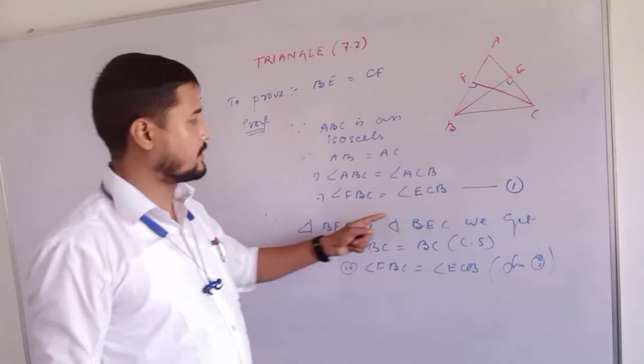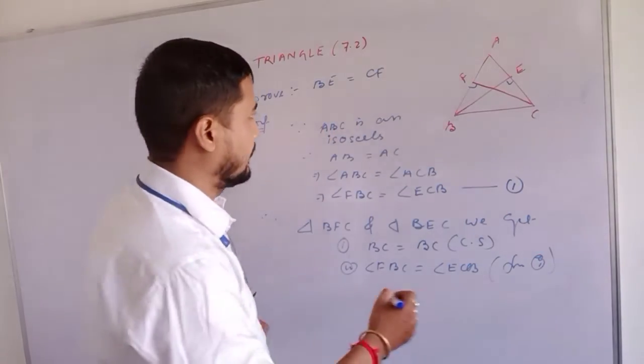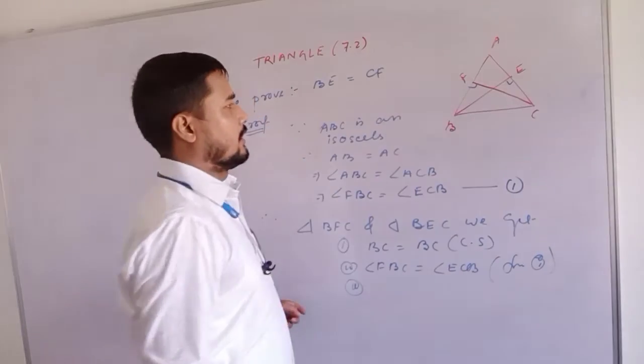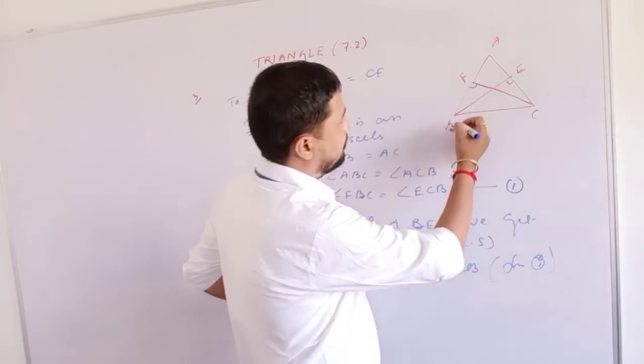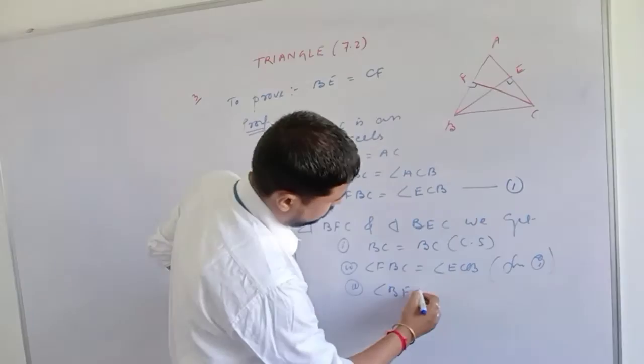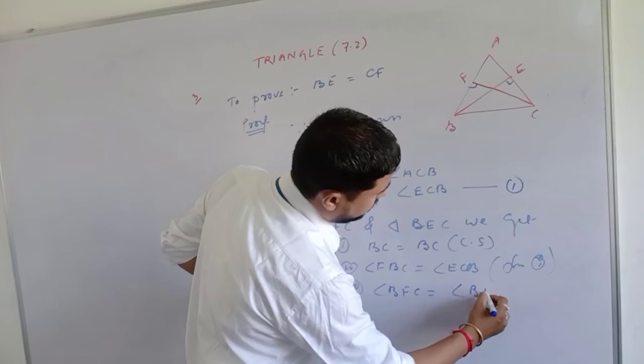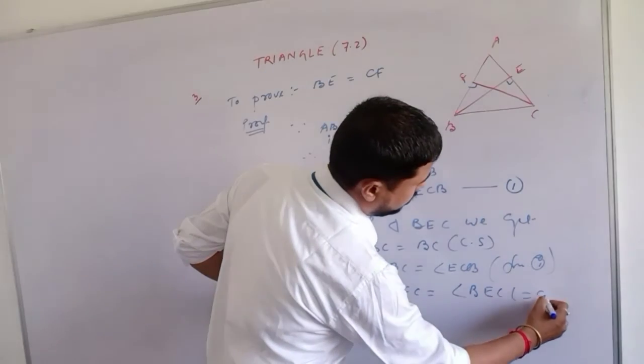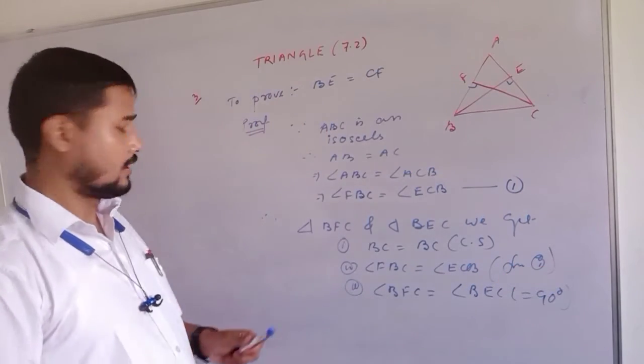Angle FBC equal to angle ECB. Number three is angle BFC equal to angle BEC. Both are 90 degrees.